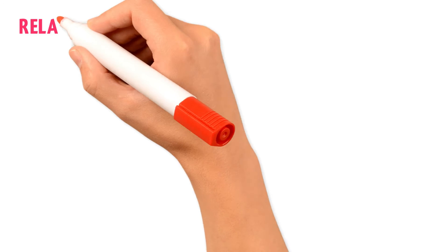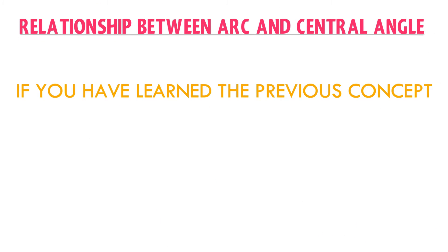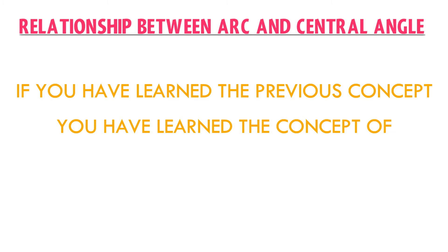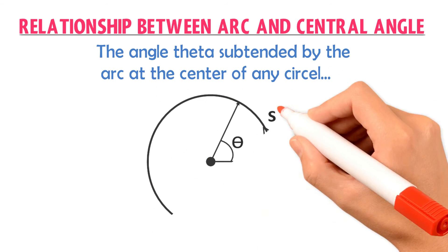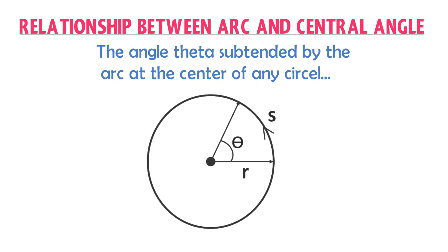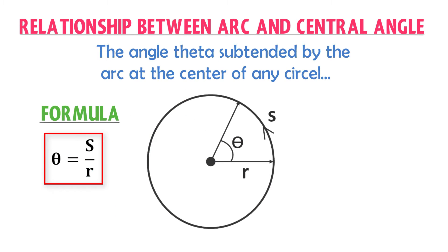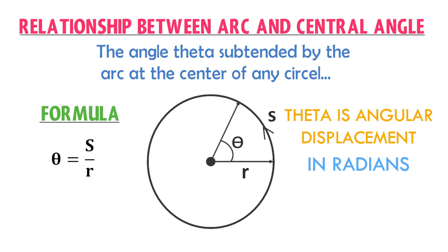Now, what is angular displacement? If you have learned the previous concept, then you have already learned the concept of angular displacement. The angle theta subtended by the arc at the center of any circle is known as angular displacement. One can also say that the central angle subtended by an arc on the circumference of a circle is known as angular displacement. Angular displacement is denoted by theta, and its formula is theta equals S divided by R, where S is the length of the arc and R is the radius of the circle.